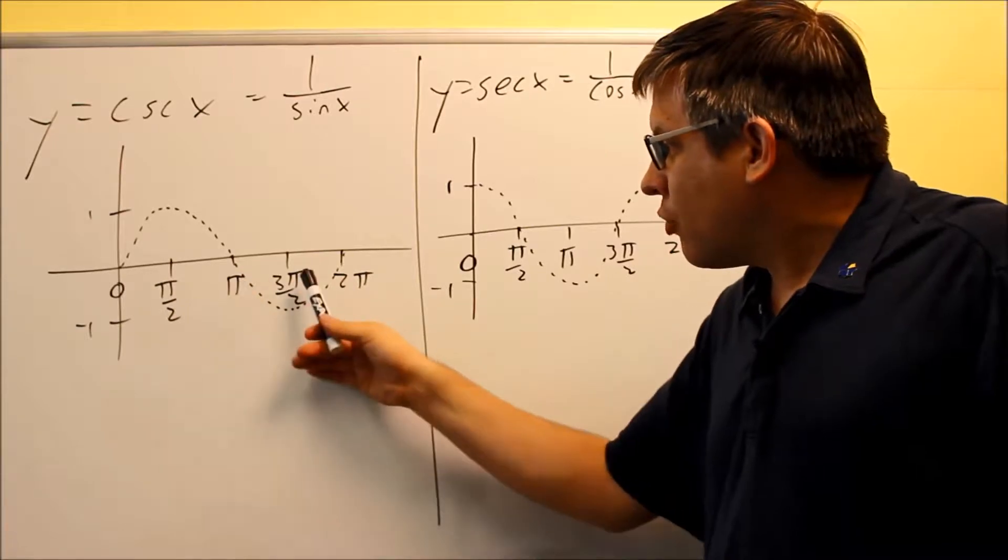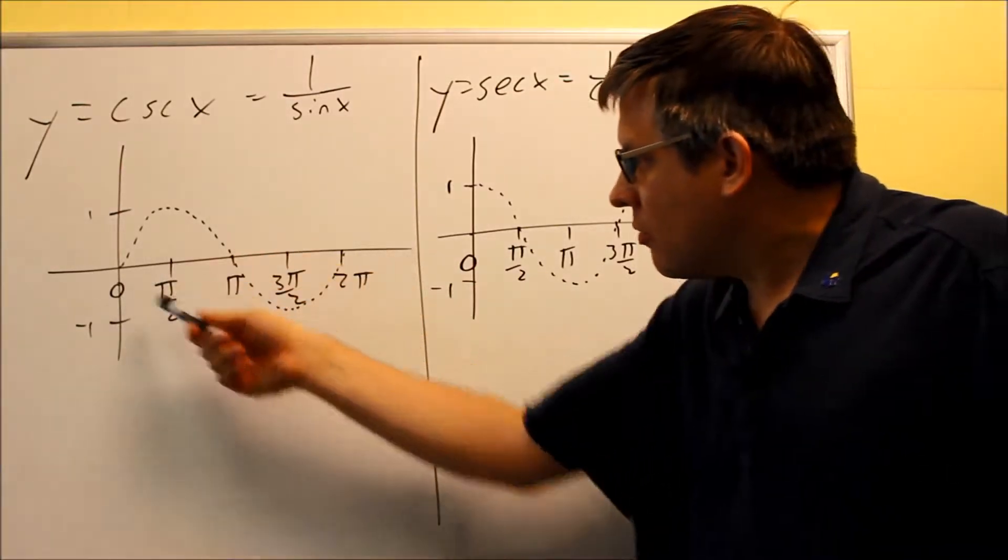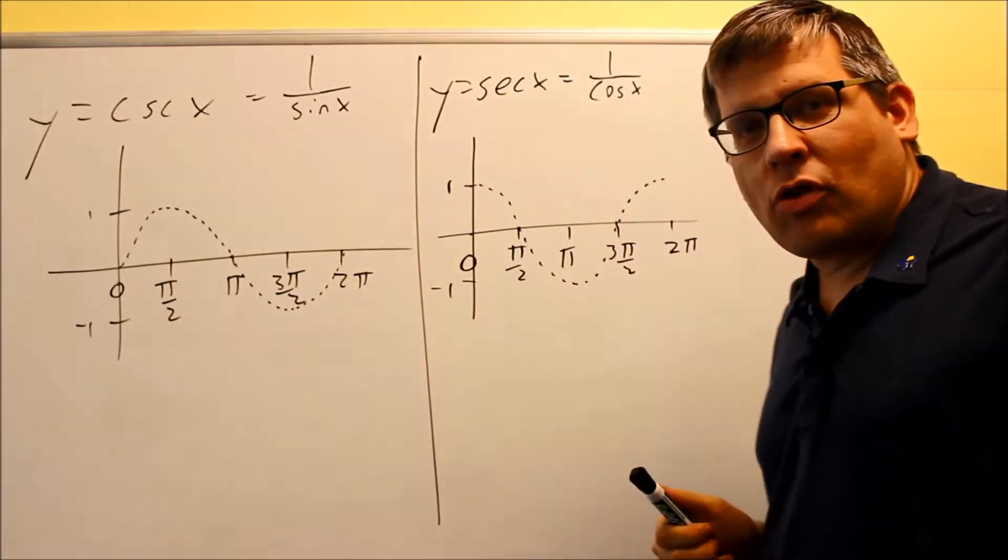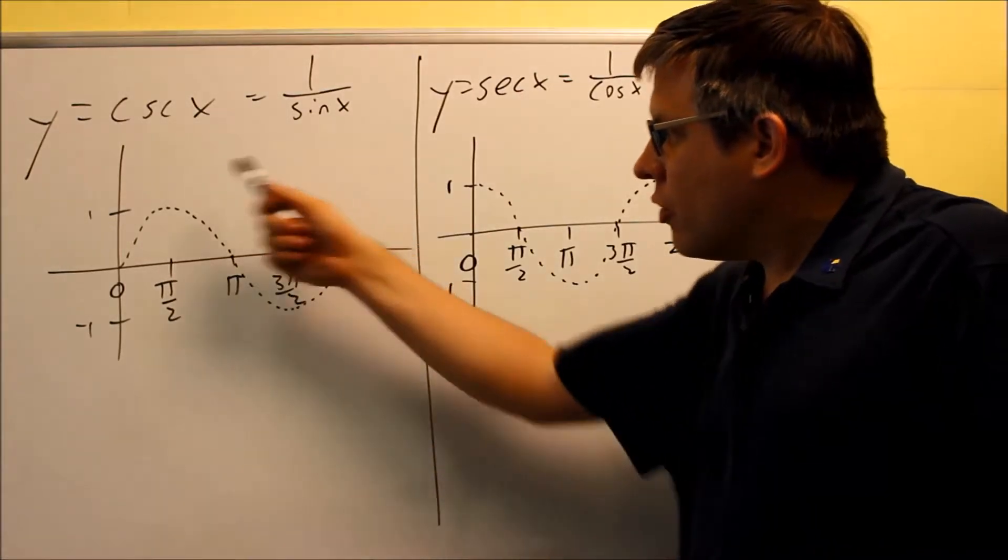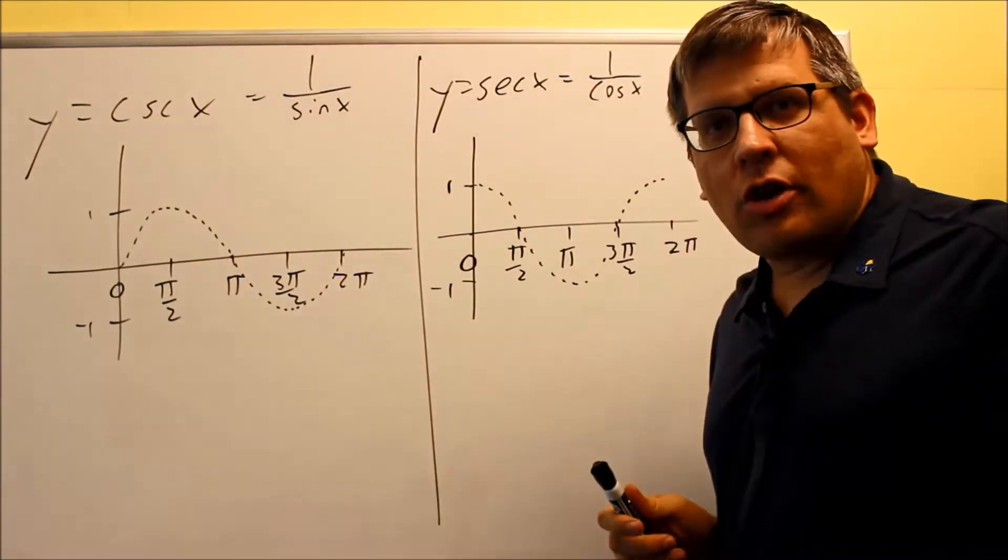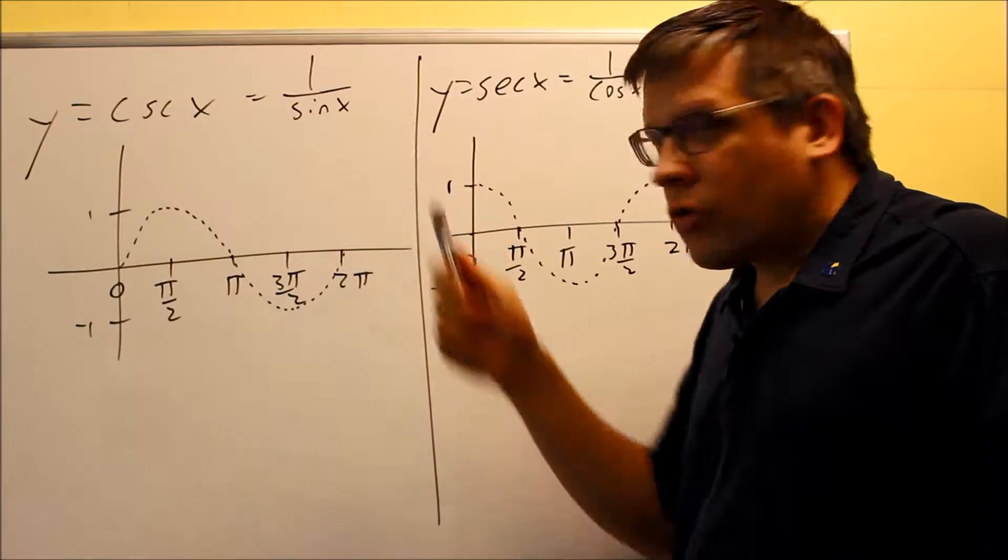pi over 2, pi, 3 pi over 2, and 2 pi, so those are all the same key points as before, and now we're going to use this in order to draw the graph of the cosecant, which is 1 over sine.